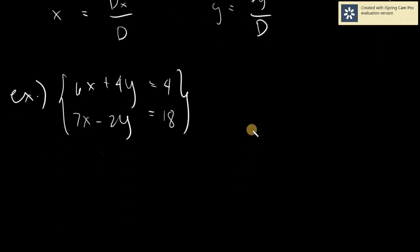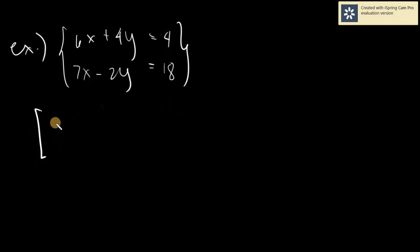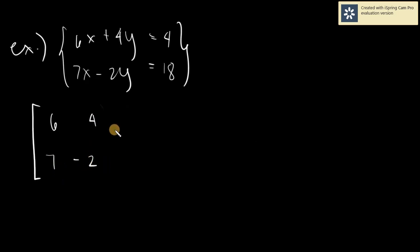D can be solved by simply using this method. When it comes to determinants, the first thing you do is take all the numerical coefficients. So in this case, you will have brackets: 6 and 4, 7 and negative 2. And there will be a partition here: 4 and 18. This partition is for the constants.